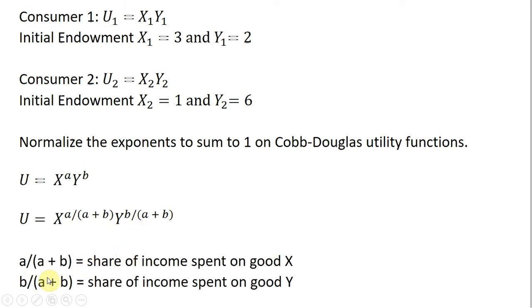Why do we do that? Because a divided by a plus b will equal the share of income spent on good x — this is a nice property of Cobb-Douglas utility functions — and b divided by a plus b will represent the share of income spent on good y.